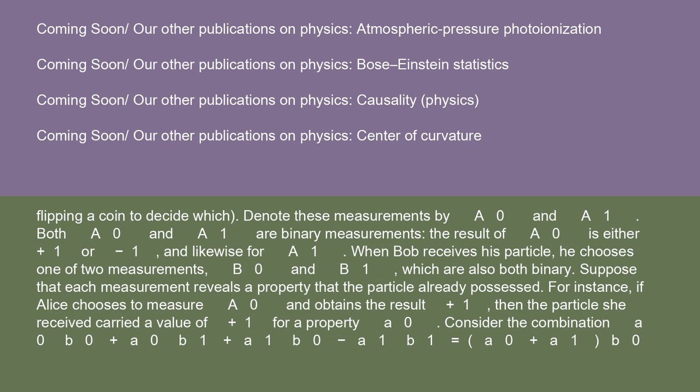When Bob receives his particle, he chooses one of two measurements, B0 and B1, which are also both binary. Suppose that each measurement reveals a property that the particle already possessed. For instance, if Alice chooses to measure A0 and obtains the result plus 1, then the particle she received carried a value of plus 1 for property A0.